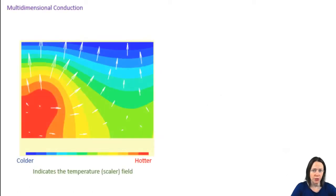Remember that most heat transfer is multidimensional, so what we have here is a body in which there's a temperature gradient in two directions. Let's define a coordinate system. So now we can say that there's a temperature gradient in the x and the y direction. The temperature gradient is indicated by the colors here.